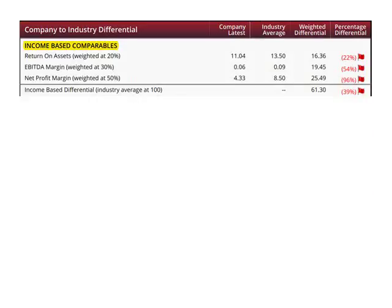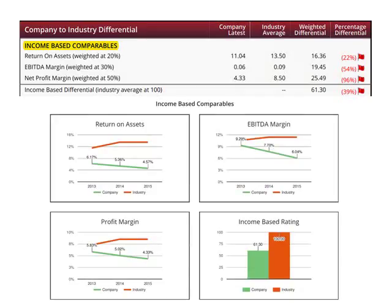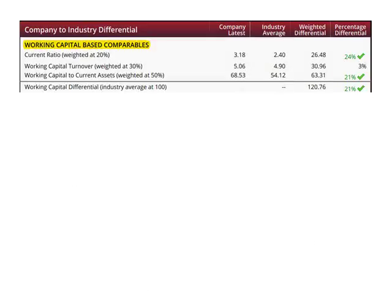On the bottom of page one, the graphs for the three ratios that make up the income-based comparables are shown, along with the summary value table. It is important to view each of these ratios over time compared to the industry to understand any trends.